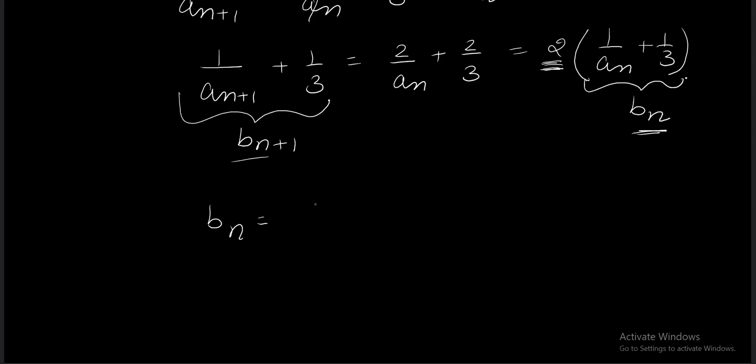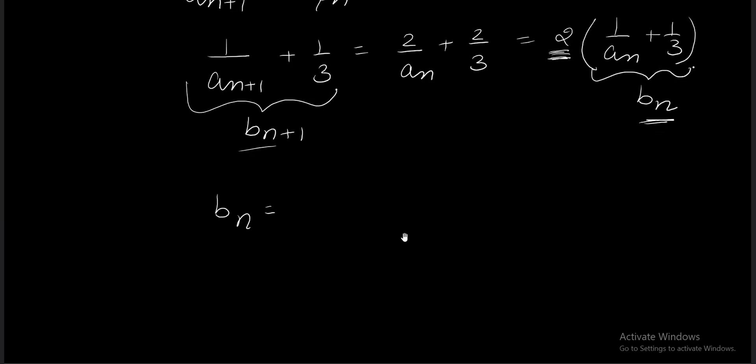We can write b_n. Since this is 1/a_n + 1/3, we have b_n = (2/3)(2^{n-1}) = 2^n/3 for the (n+1)th term, so b_n = 2^{n+1}/3. But b_n = 1/a_n + 1/3, therefore 1/a_n = -1/3 + 2^{n+1}/3.